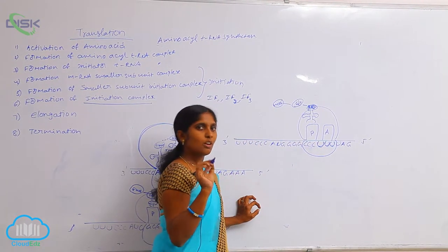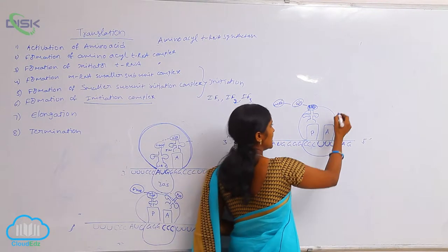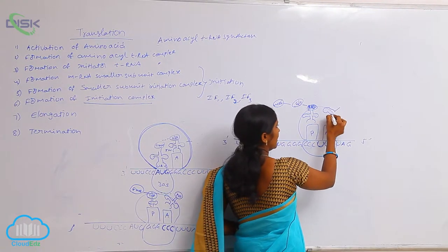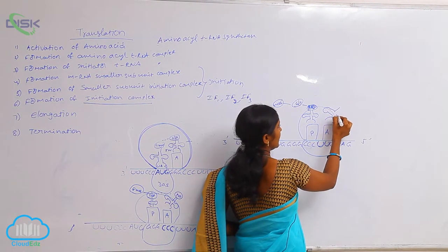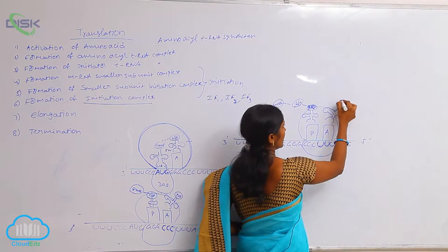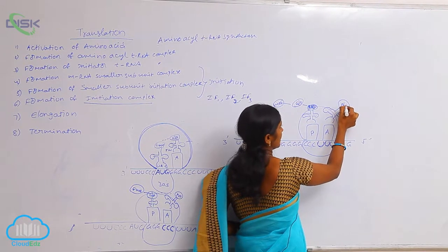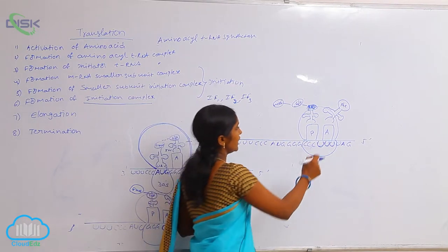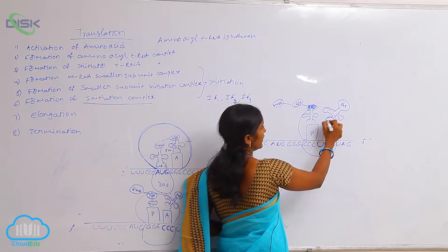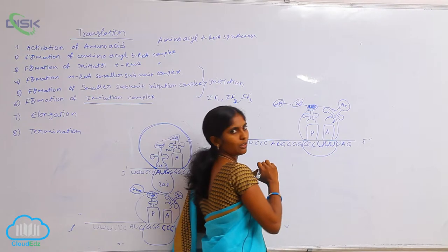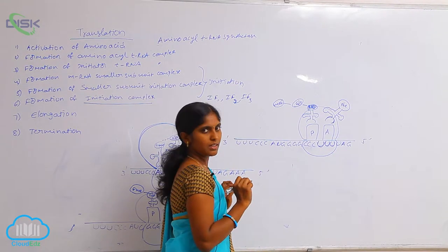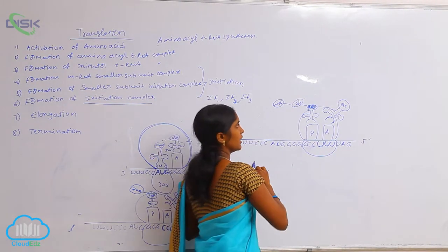So, UUU codon always force the phenylalanine. That's why there is an entry of phenylalanine tRNA. So, the phenylalanine tRNA joined at the amino acid site of the larger part of the ribosome.